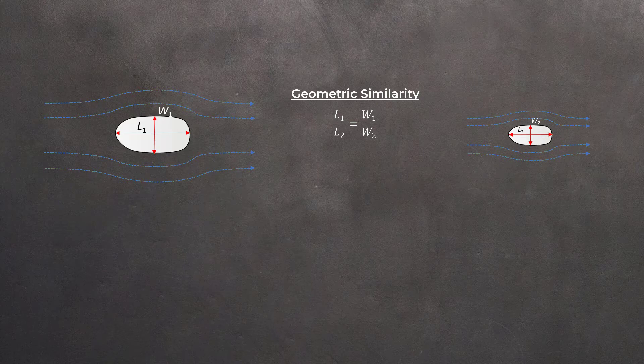Dynamic similarity requires that for geometrically similar bodies, the flow patterns are also similar. That is, the velocities, velocity gradients, fluid forces, and streamlines all scale with the geometry.